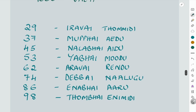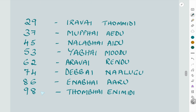Let us see a couple of examples from 20 to 99. 29 is 'iravai tummidi' — iravai is 20 and tummidi is 9. 37 is 'mukbhai eidu'. 45 is 'nalabhai aidu'. 53 is 'yaabhai moodu'. 62 is 'arabhai rendu'. 74 is 'debbhai nalugu'. 86 is 'enabhai aaru'. 98 is 'tumbhai enimidi'.